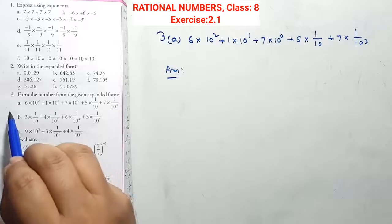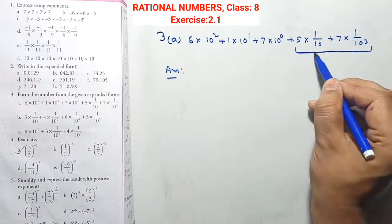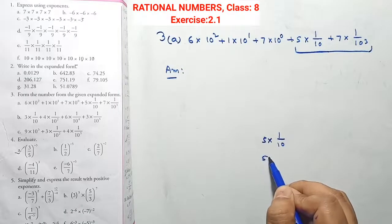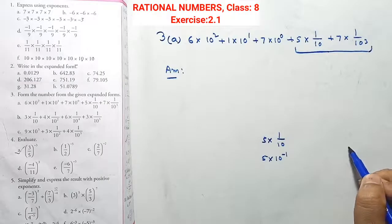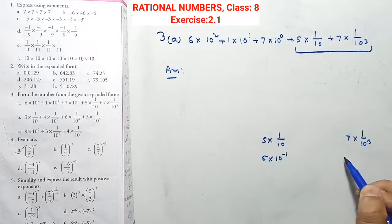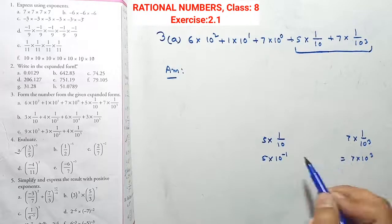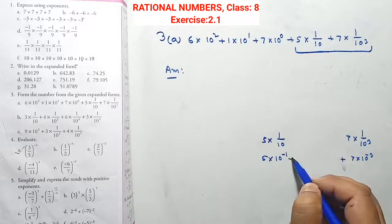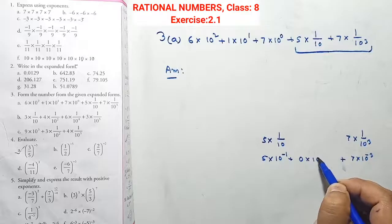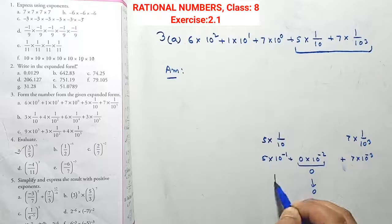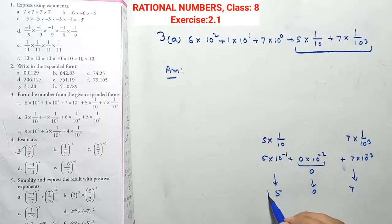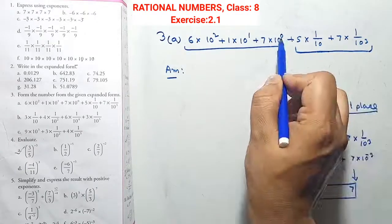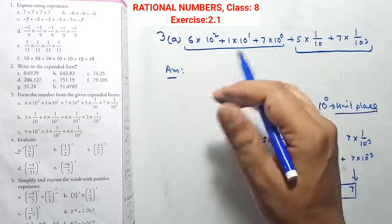Question 3: Form the number from the given expanded form. Counting the digits — since these are decimal digits, 5 into 1/10 means 5 into ten power minus one. Counting further, 7 into ten power minus three. So the value: zero, then five, then seven. The number 507 is the part after the decimal. The number before the decimal: counting gives us zero, so we can find which digit comes before the decimal.